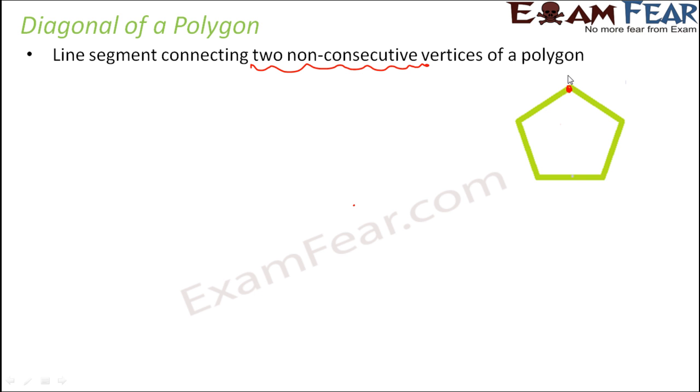Now in this polygon, which are the vertices? One, two, three, four, five. So these are the five vertices. Let's name them as A, B, C, D, E.